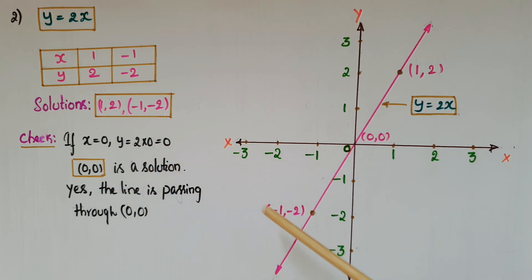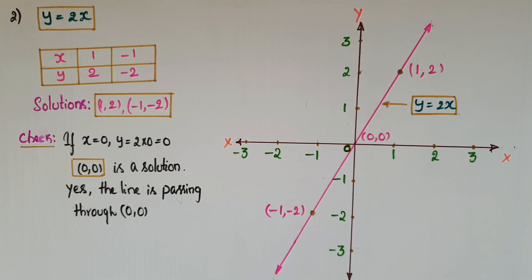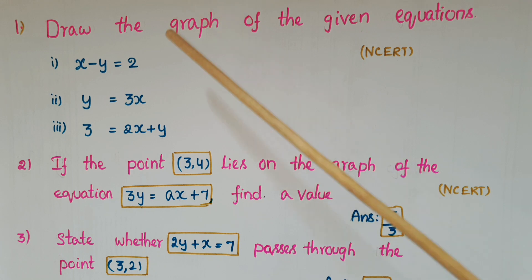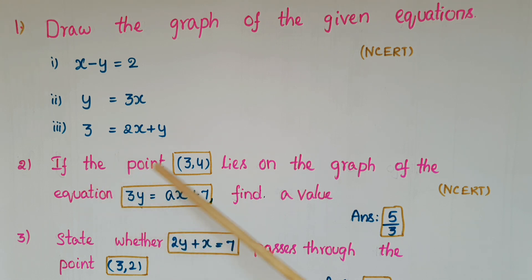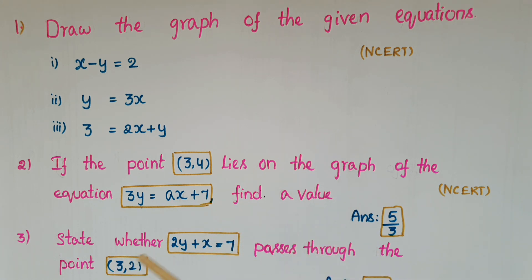Now please do these practice problems. First, draw the graph of the given equations — I have given three equations. Second, if the point (3, 4) lies on the graph of the equation 3y is equal to ax plus 7, then find the value of a. Third, state whether 2y plus x is equal to 7 passes through the point (3, 2).